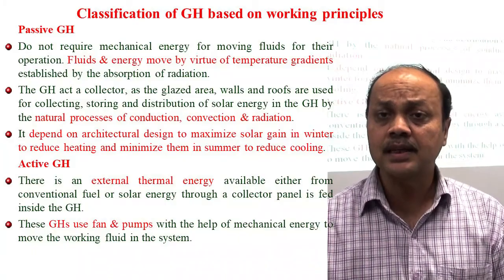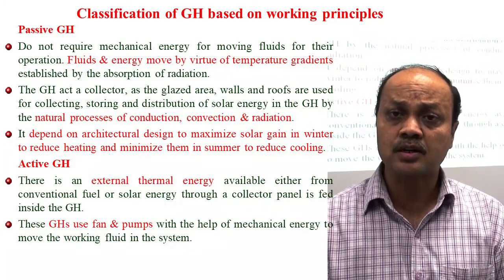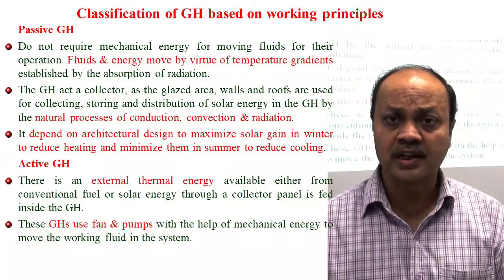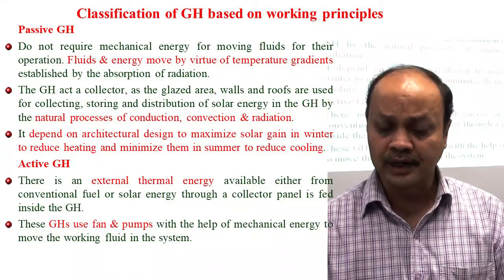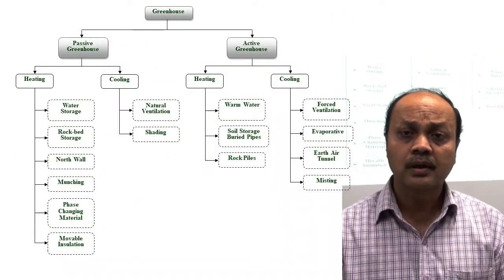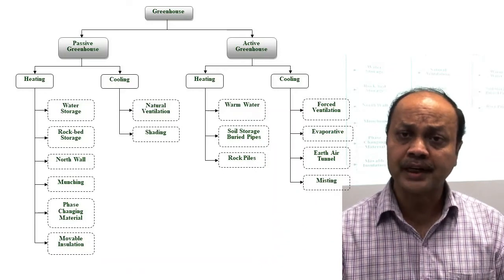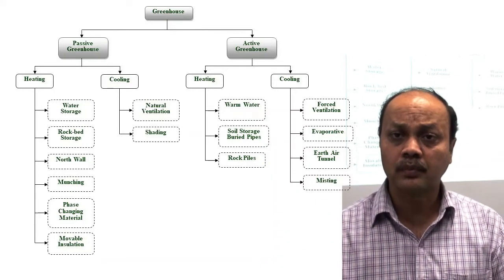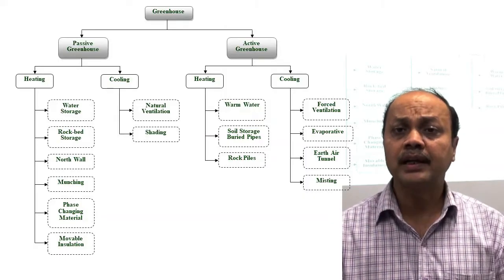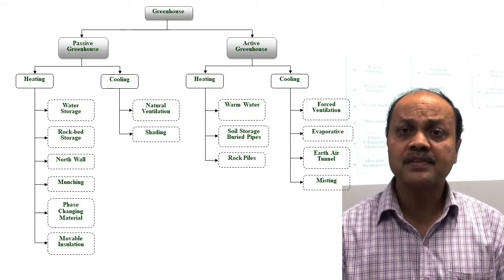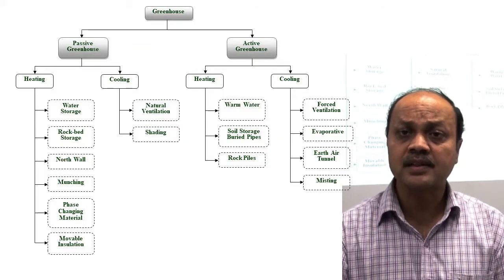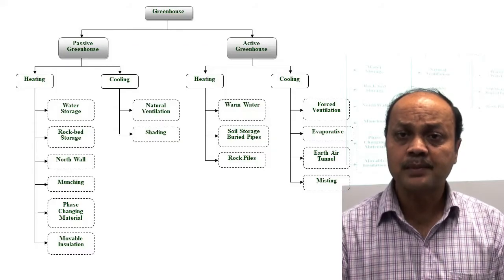In the active greenhouse, which is opposite to passive, external sources of energy — either conventional fuel or solar energy — are used for cooling and heating operations. Both passive and active technologies can be used for heating and cooling. A separate lecture will discuss in detail the various types of active and passive technology for heating and cooling of the greenhouse.